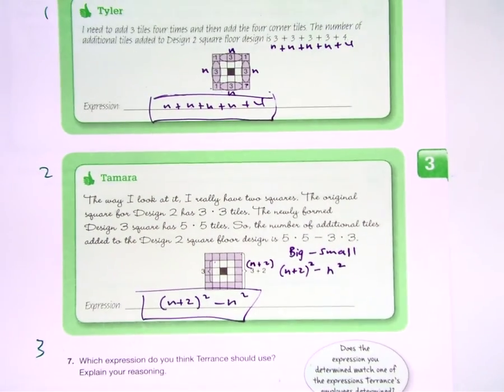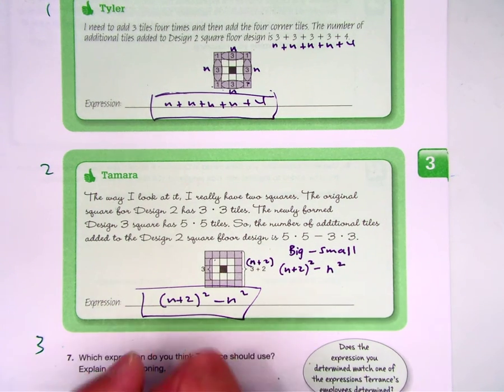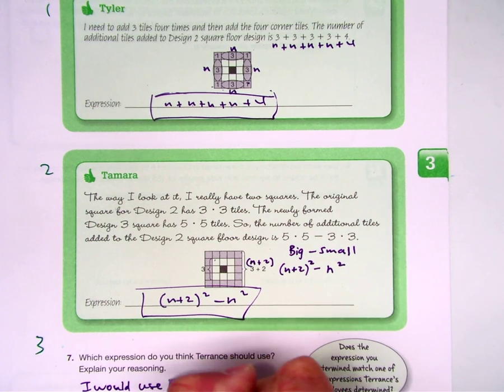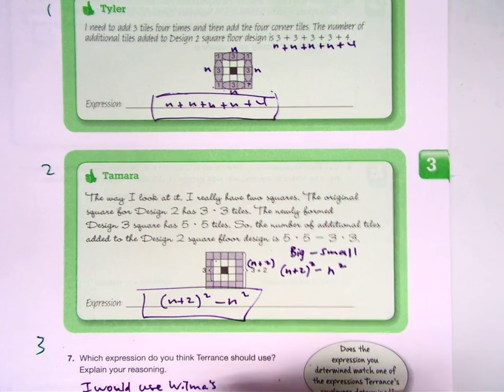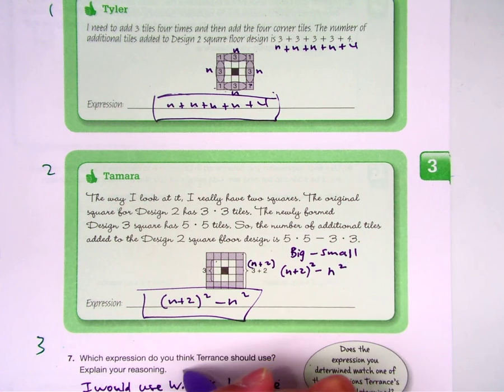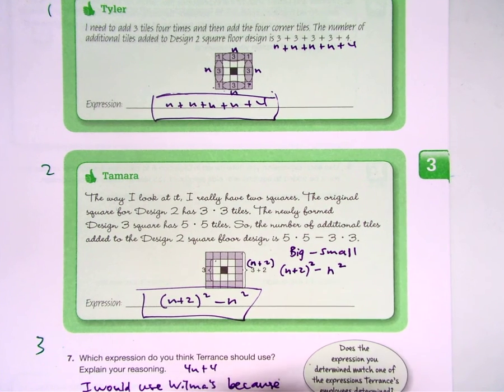Now the last question, number 7 says which expression do you think Terence should use? Explain your reasoning. I would use Wilma's. Because Wilma's was just 4n plus 4. Because it is easy and simple.